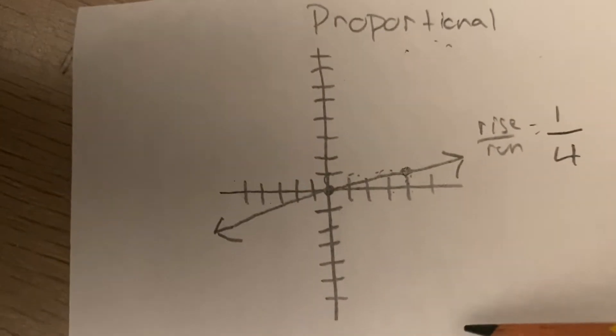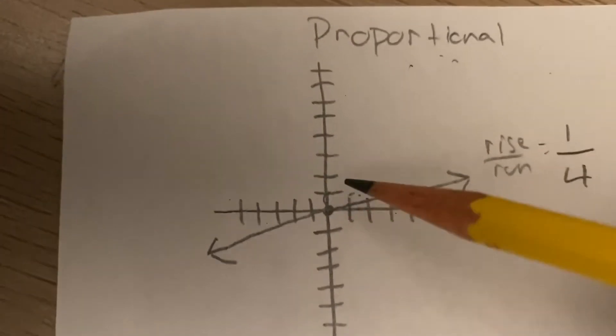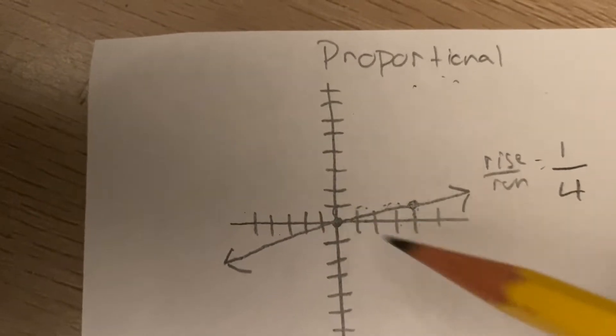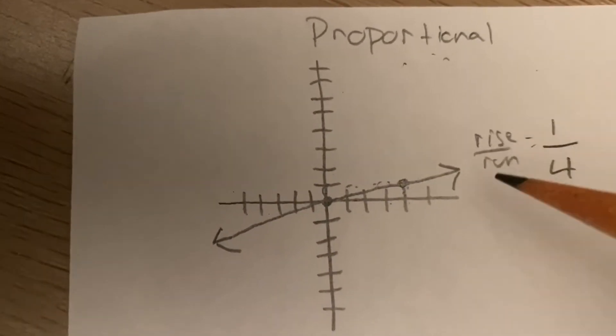Remember, if it goes down instead of up. Remember, you always go from left to right. If it goes down, then the top number would end up being negative.